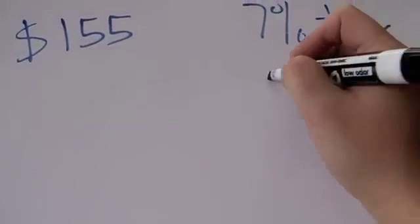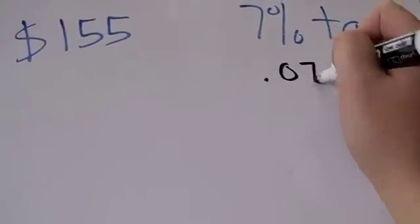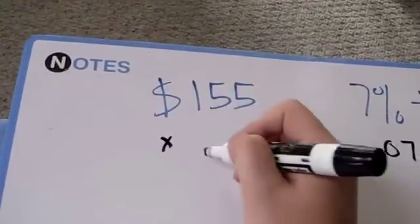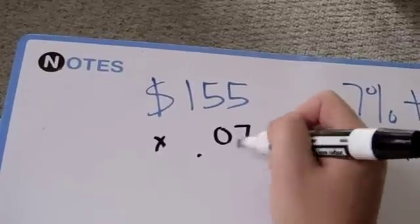The first question you ask yourself is how do you represent 7% as a decimal? We do this by moving the decimal place two spaces to the left. 7% is equal to .07.